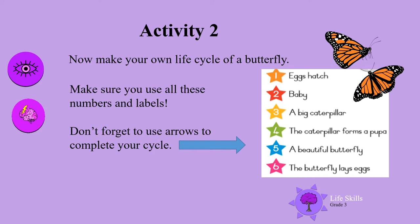Activity 2. Now make your own life cycle of a butterfly. Make sure you use all these numbers and labels. Don't forget to use arrows to complete your cycle. So you're going to draw some eggs hatching, then a baby, then a big caterpillar, then a caterpillar that forms a pupa. Number 5, a beautiful butterfly, and then the butterfly who lays the eggs, and the cycle goes round and round.